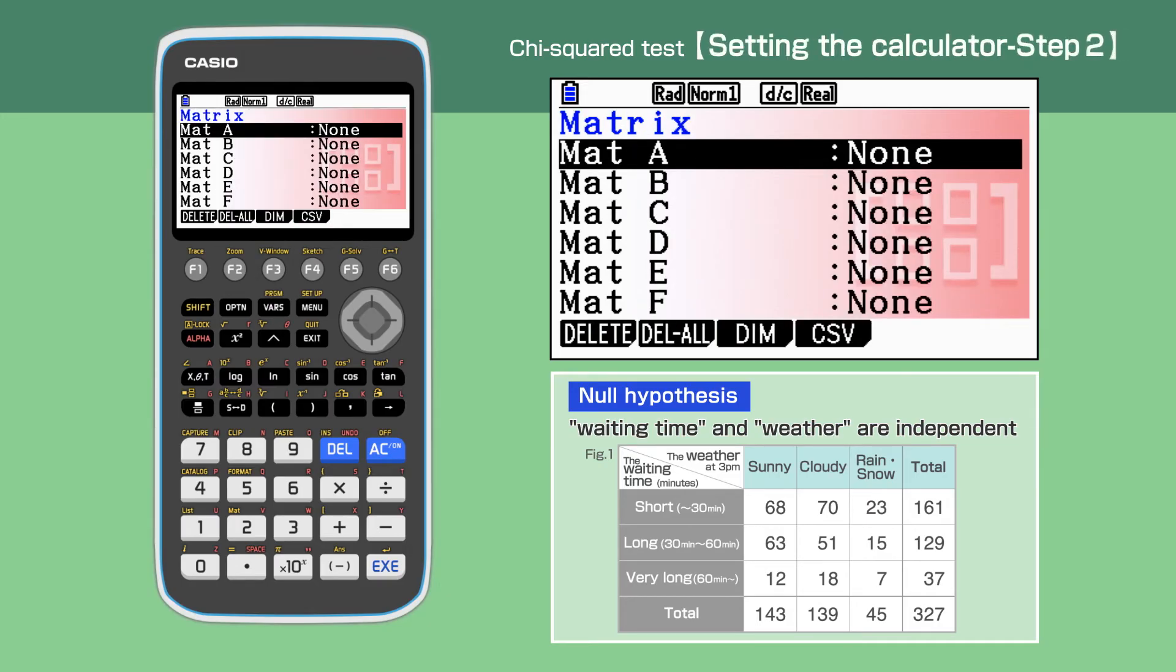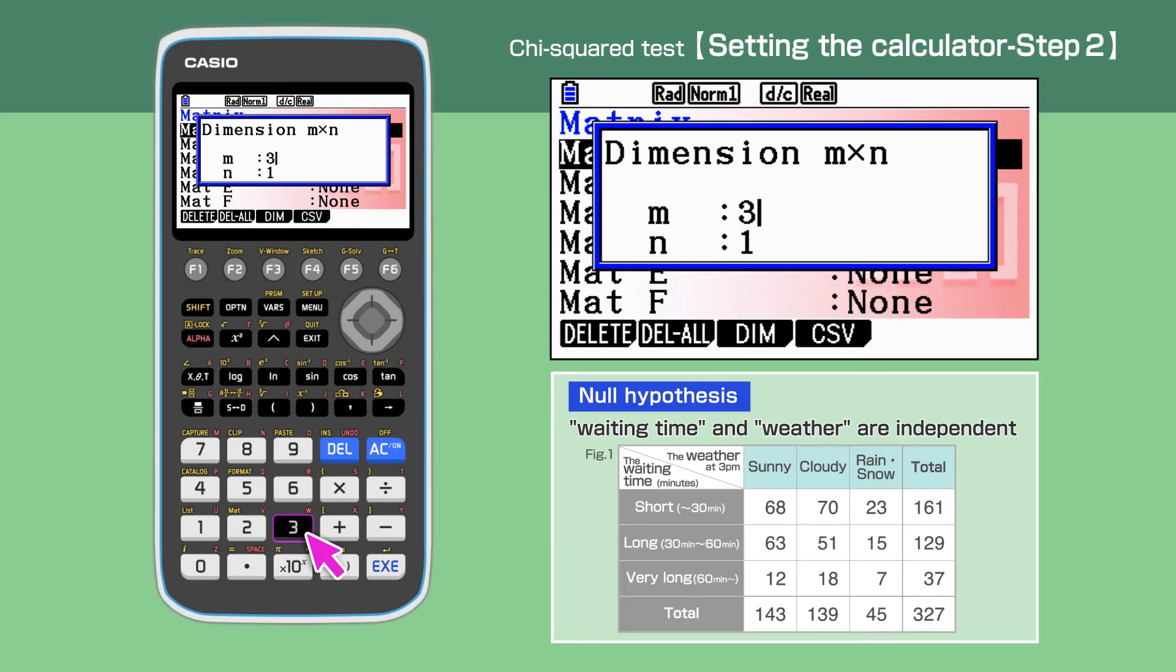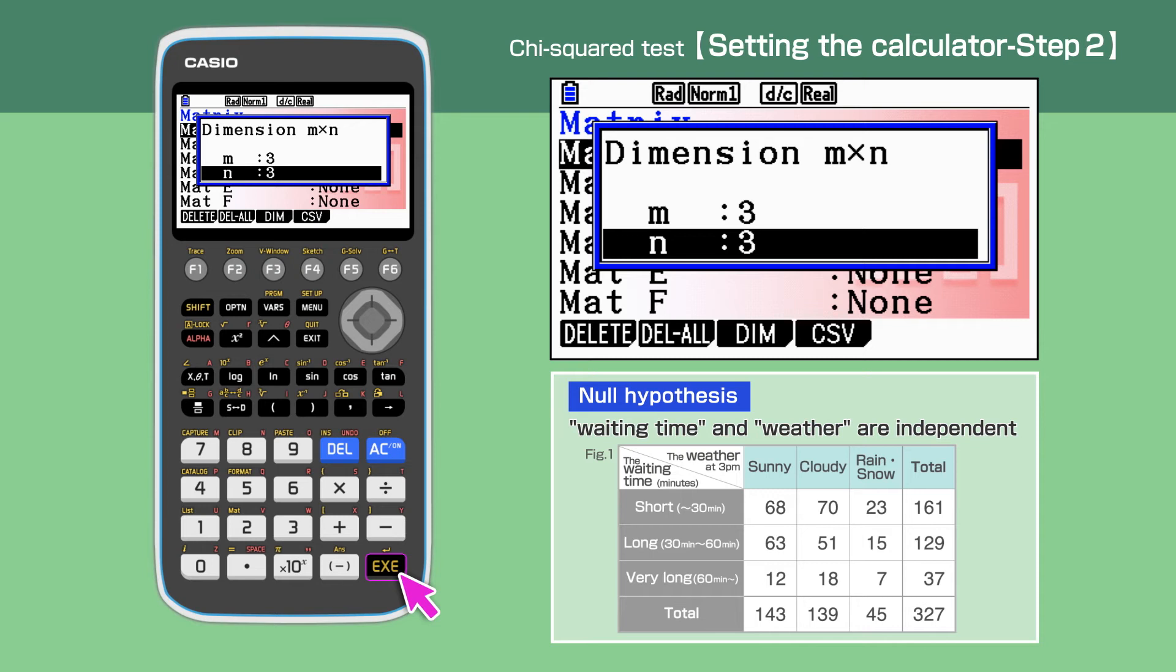The screen will switch to the matrix setting screen. Highlight Mat A, then press Execute to access Mat A dimension. Enter 3 for M and 3 for N. M is the number of columns and N is rows.